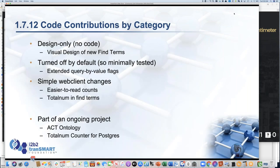The contributions include: Beth Israel made a small change to the web client to make accounts easier to read. Robert Bradford at UNC added a small change to support extended query-by-value flags. Mauro at University of Pavia added a change to the web client to show total num counts in Find Terms. We borrowed UI design work from the LEAF team at the University of Washington, and the Postgres total num counter script came from a University of Washington contributor.